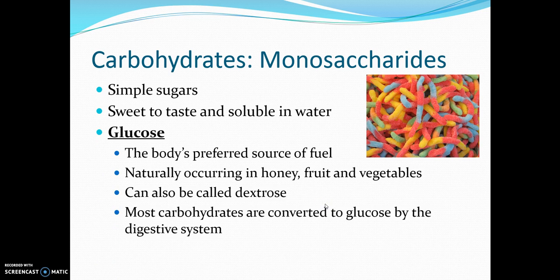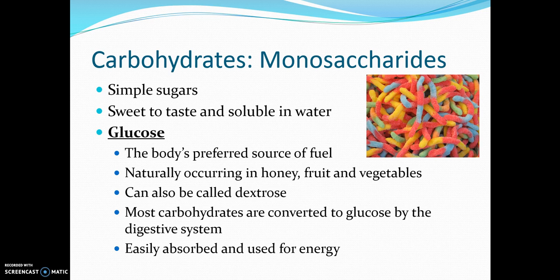Monosaccharides are our simple sugars — sweet to taste and soluble in water. Glucose is probably the one you've heard of before. It is our body's preferred source of fuel, naturally occurring in honey, fruits, and vegetables, and can also be referred to as dextrose. Most carbohydrates actually convert to glucose, which is stored in the liver and muscles and used as our primary source of energy — especially valuable for high-level sports or general exercise.